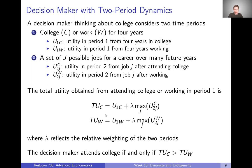The total utility of college is the utility from going to college in period one, plus a second term. The lambda term in front is essentially a weighting between the two periods — how much they weight the future career versus the first four years, with some discounting. Then it's the maximum over J: when they reach period two, they choose the job that maximizes utility conditional on having gone to college. So the utility in the second period after college is the utility from the utility-maximizing job. We weight it by lambda and add it to period-one utility.